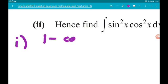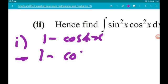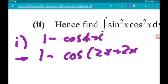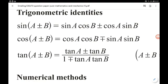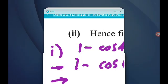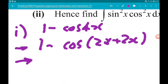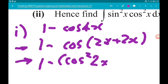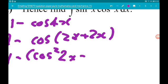1 minus cos 4x can be written as 1 minus cos 2x add 2x. Now, using the compound angle formulas, cos of a plus b is cos a cos b minus sin a sin b. So, it's going to give us 1 minus cos squared 2x minus sin squared 2x. Now,